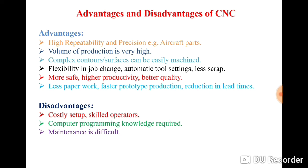In batch production, the industry manufactures products in a particular batch, which may consist of say 100 to 1000 components. In mass production, you are manufacturing a single component in huge quantities — for example, a cement manufacturing industry producing cement day and night, or a refinery producing petrol or diesel. The CNC machine is suitable for batch production only.